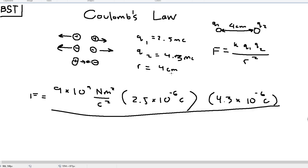Converting 4 centimeters to meters would be 0.04 meters squared.